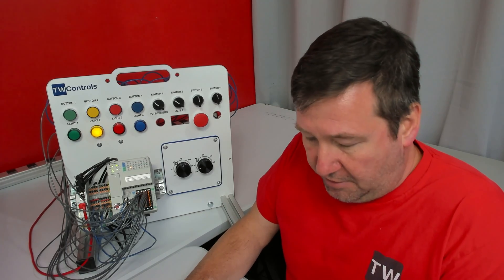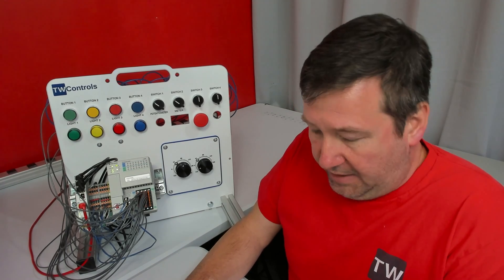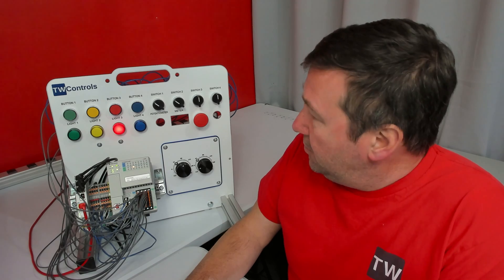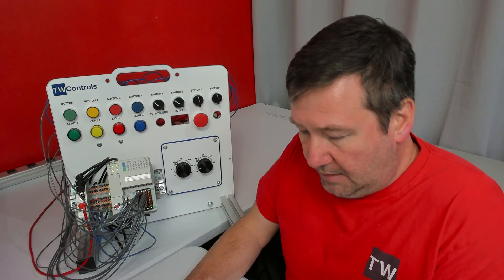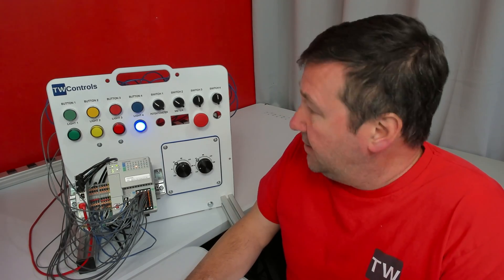We put a one in output two, that turns on the red light. We put a one in output three, that turns on the blue light. And then we need to test the enables to the Kinetics drives.